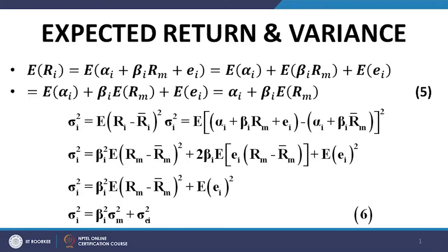As far as the expected return is concerned, it is quite straightforward. Because the expected value of the random error term E_i is zero, the expected return on an individual security is: E(R_i) = α_i + β_i·E(R_m). This is equation number 5.